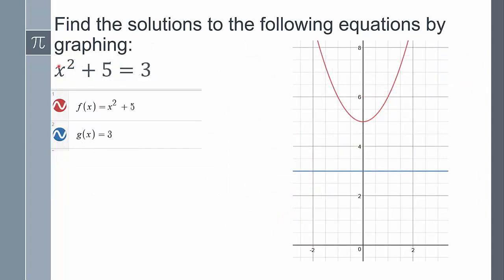For this one, I graphed f(x) equals x squared plus 5 and g(x) equals 3. Notice they did not intersect, so there are no real solutions to this equation. Later in this class, we'll talk about how there technically could be a non-real solution.